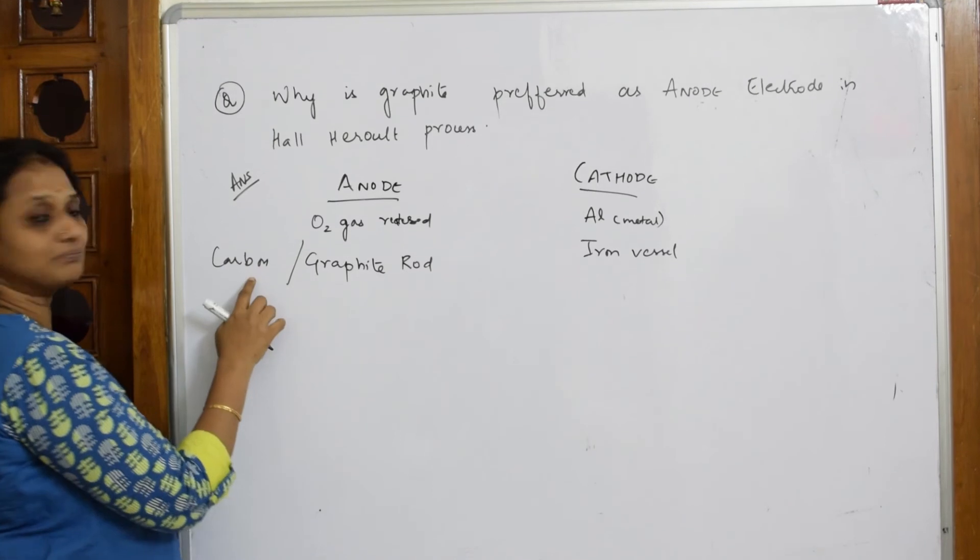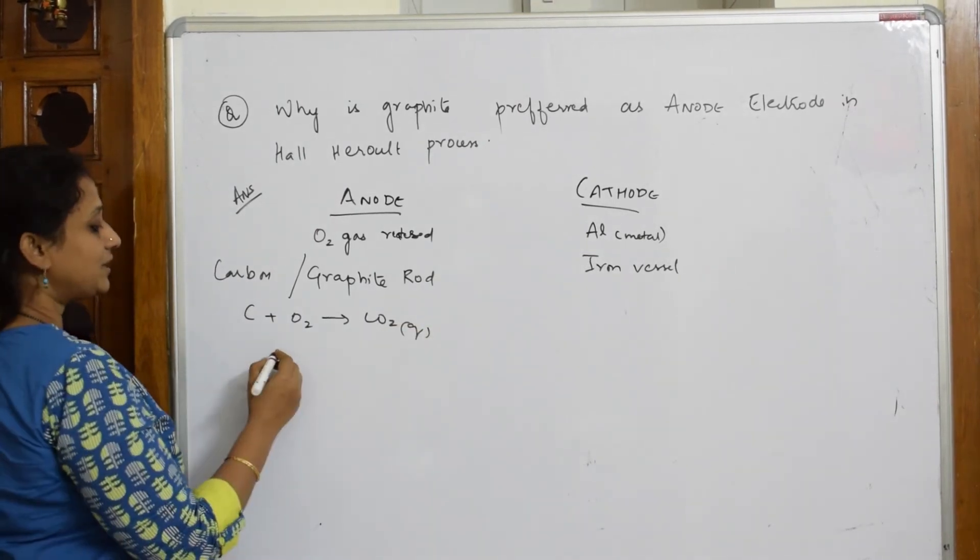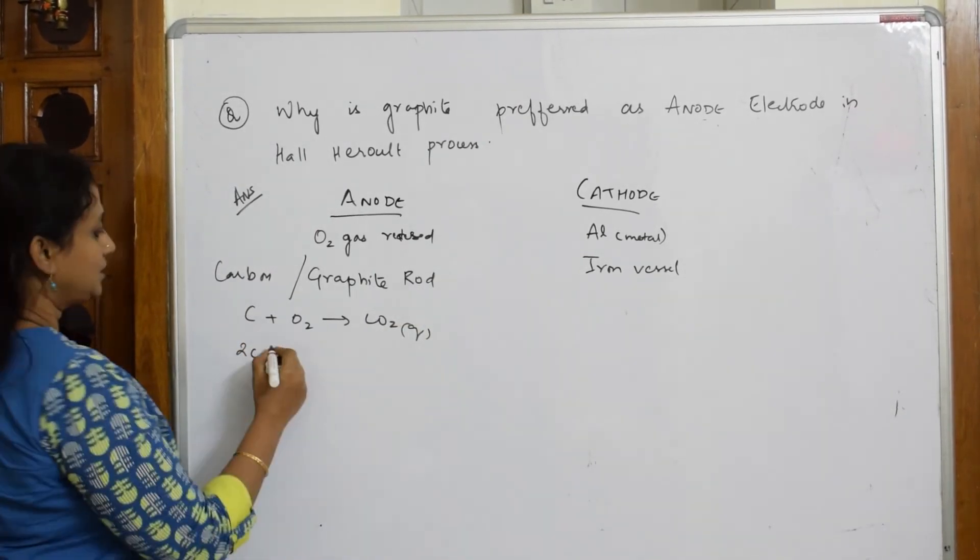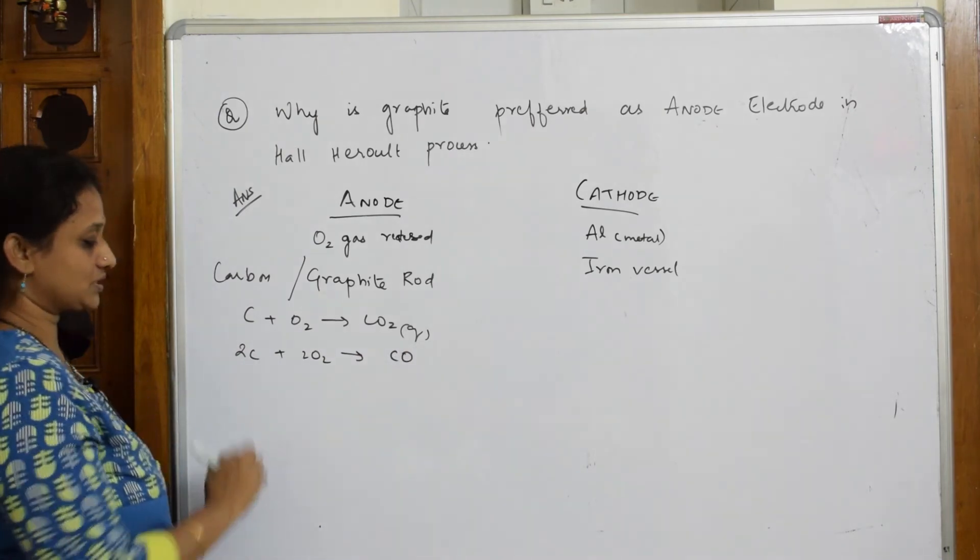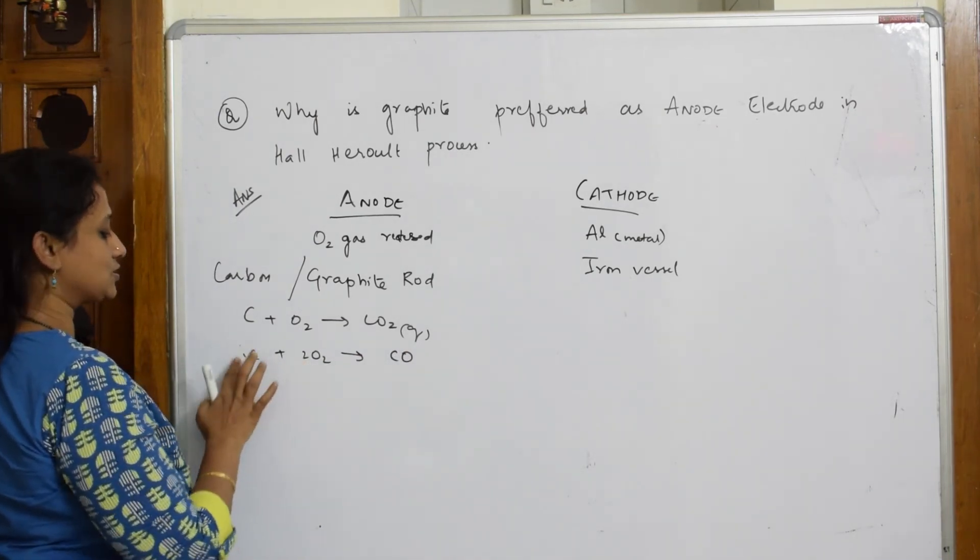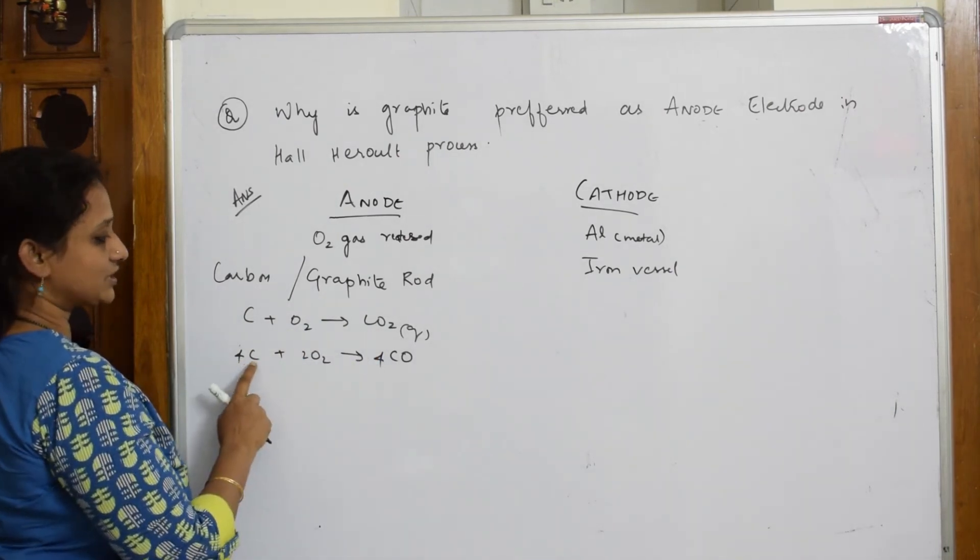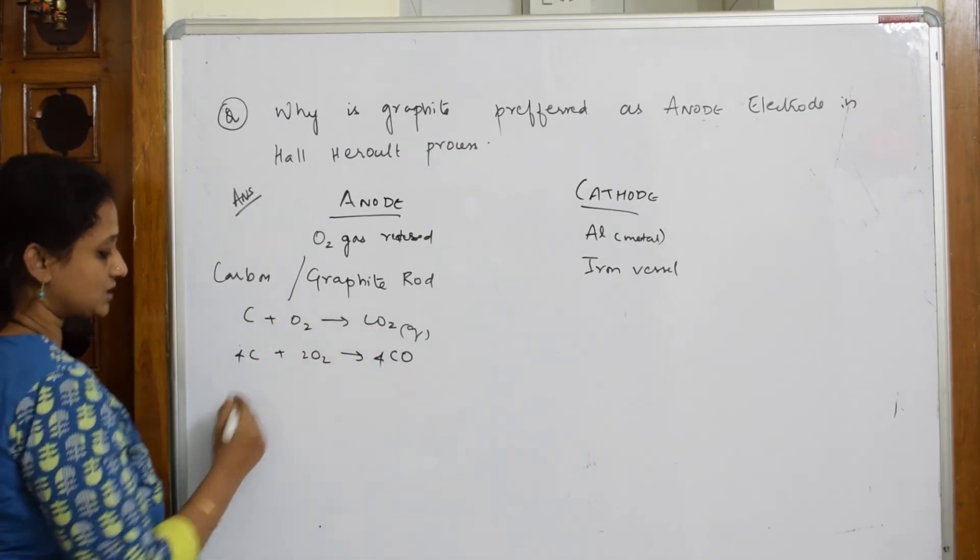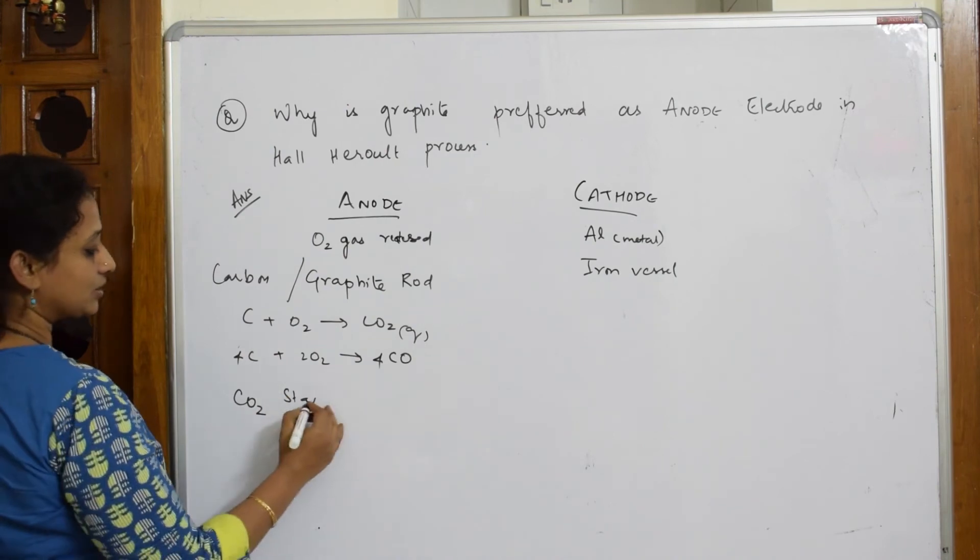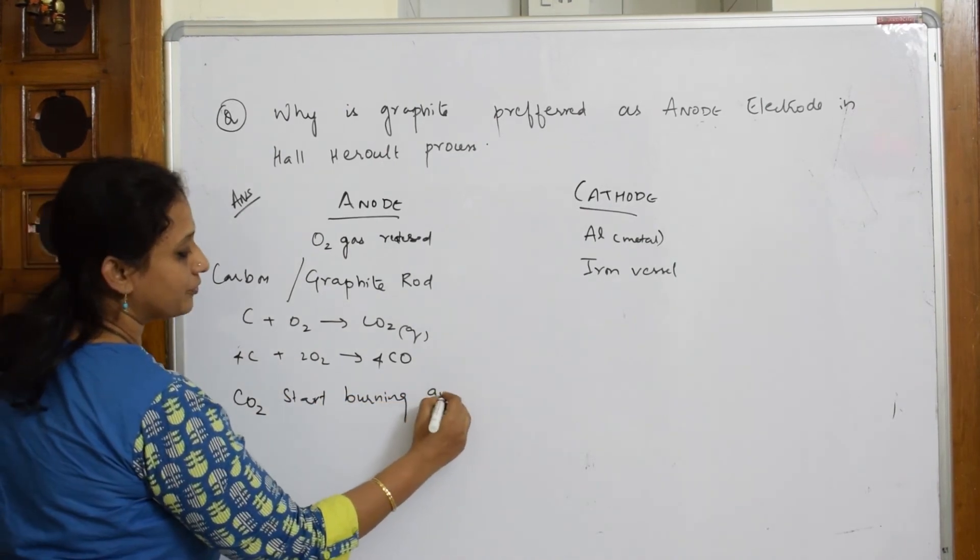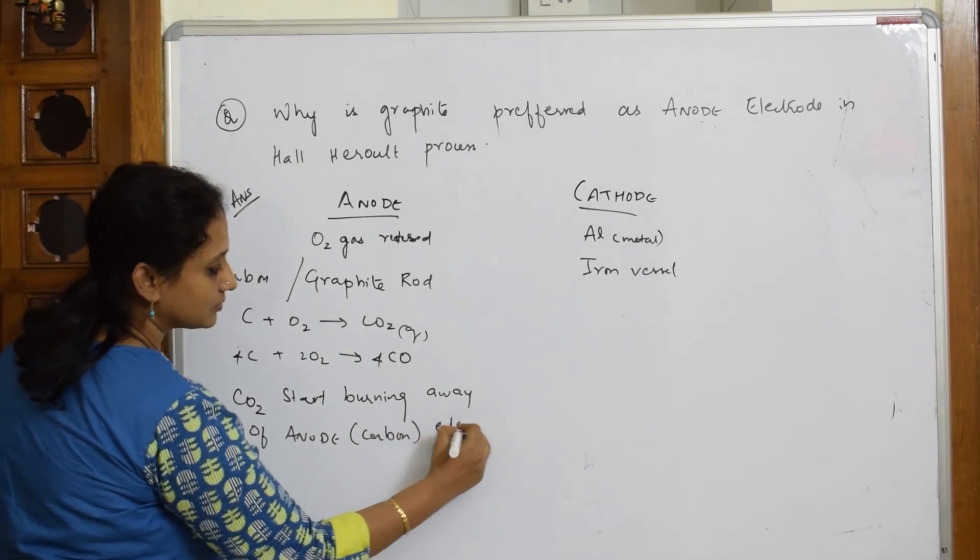Now, what happens? The oxygen which is released is going to combine with this carbon. So carbon, it's going to combine with carbon forming carbon dioxide gas. And further, if I take excess of oxygen, I get carbon monoxide. This carbon dioxide will start burning up. It will burn off that anode electrode. It starts burning away off anode electrode, that is your graphite, your carbon electrodes.